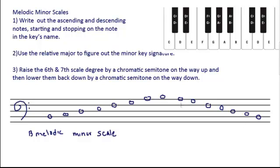We've got our notes written in, so let's use our relative major. Remember, if we want the relative major, we go up. So we go from B up three semitones, two note names — it takes us to D. D major has two sharps: F-sharp and C-sharp. So we'll write those sharps in, and now we have our natural minor scale.